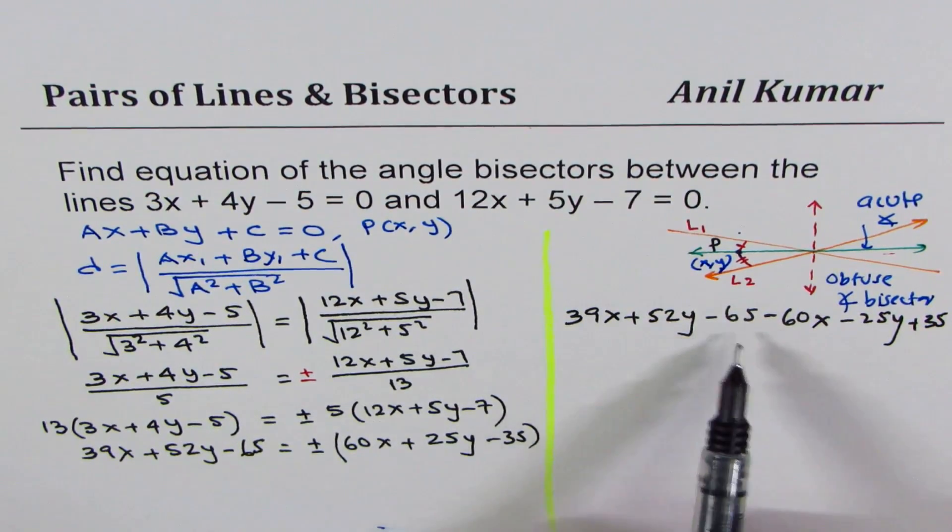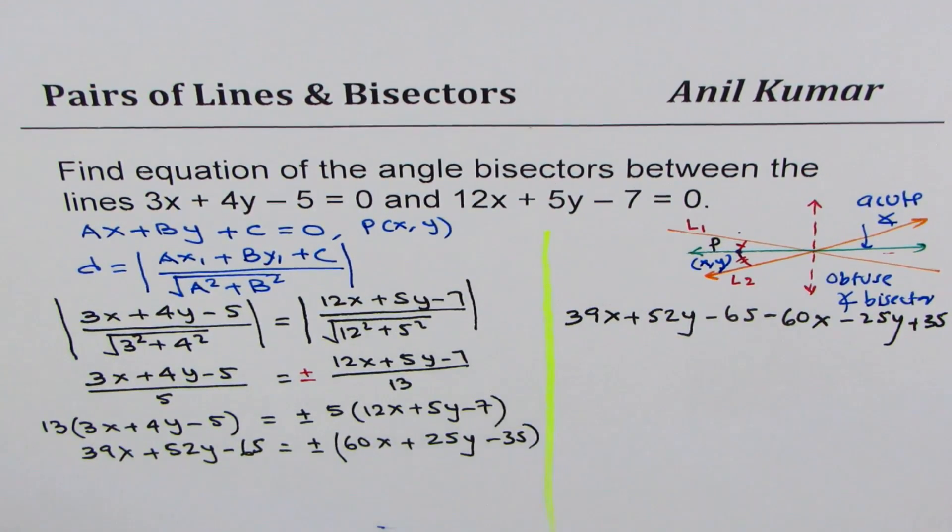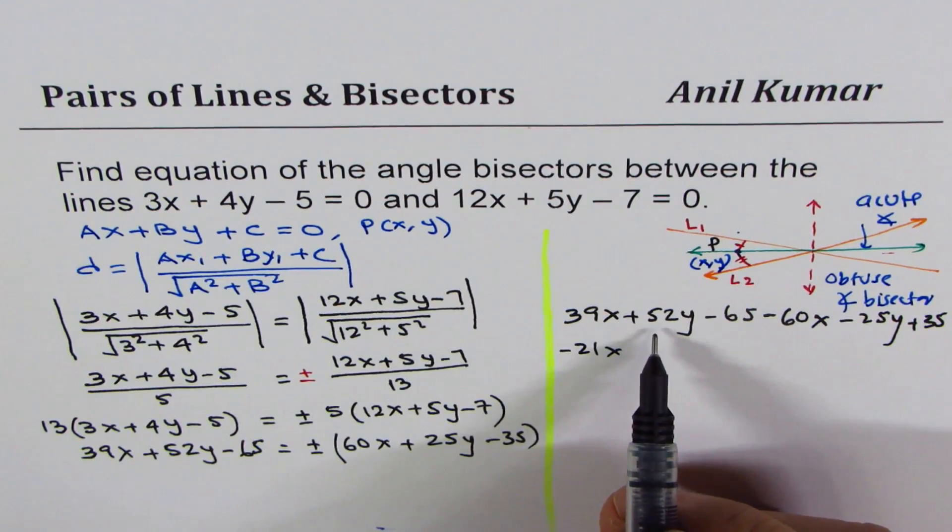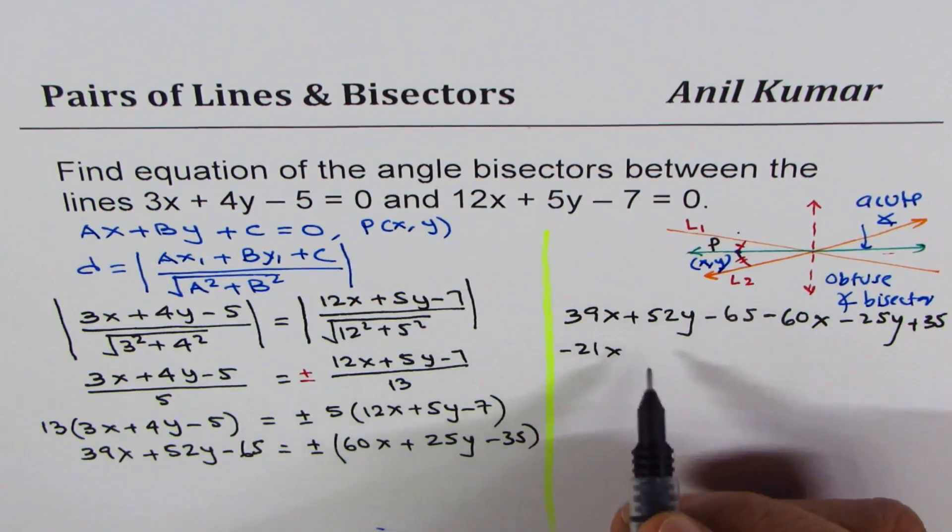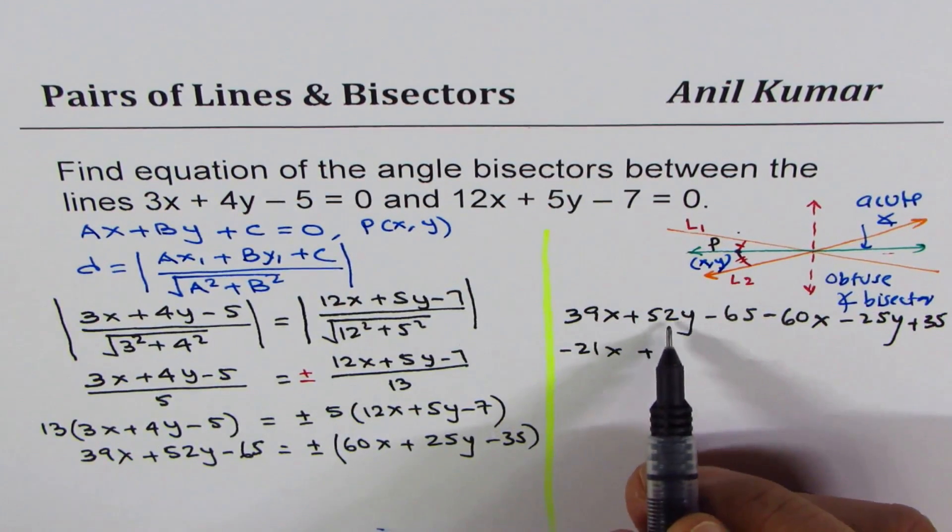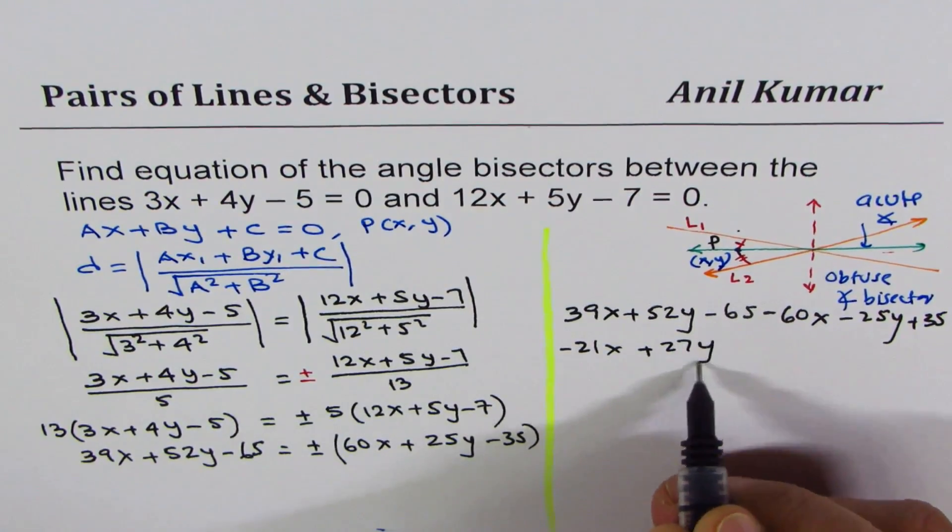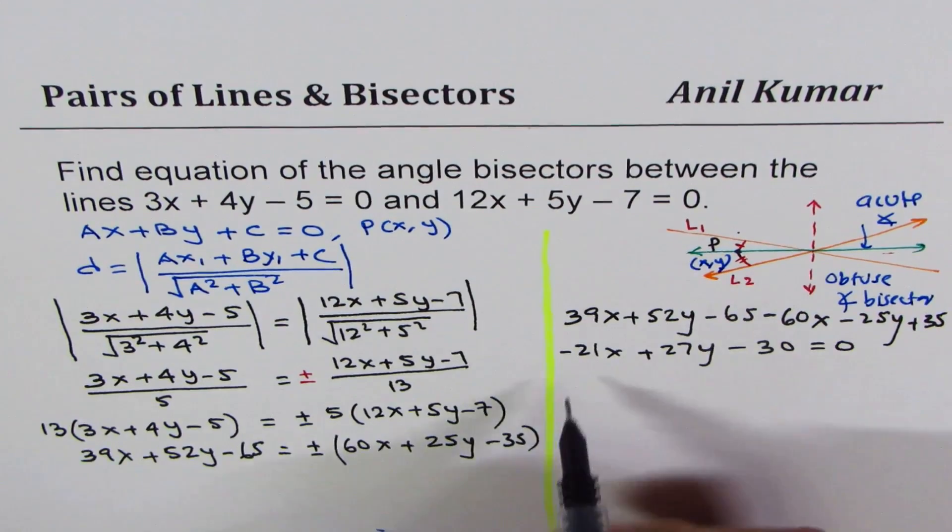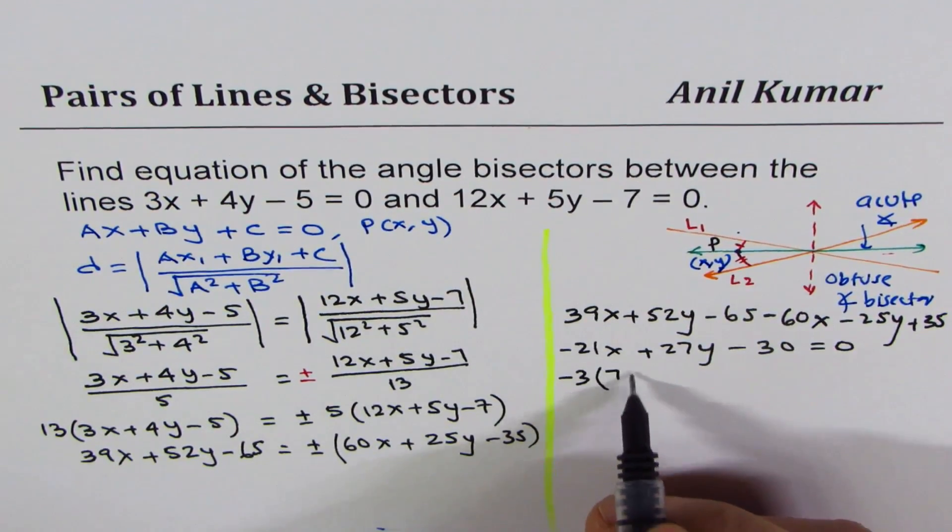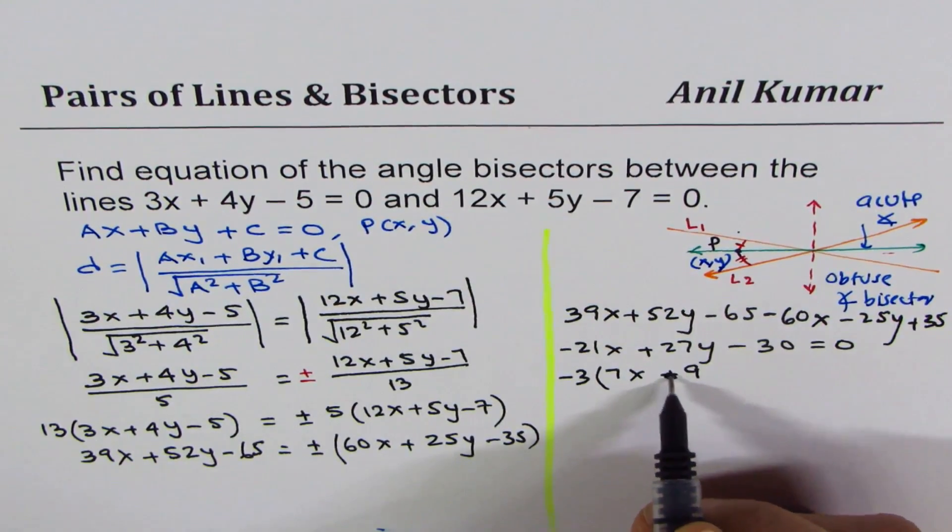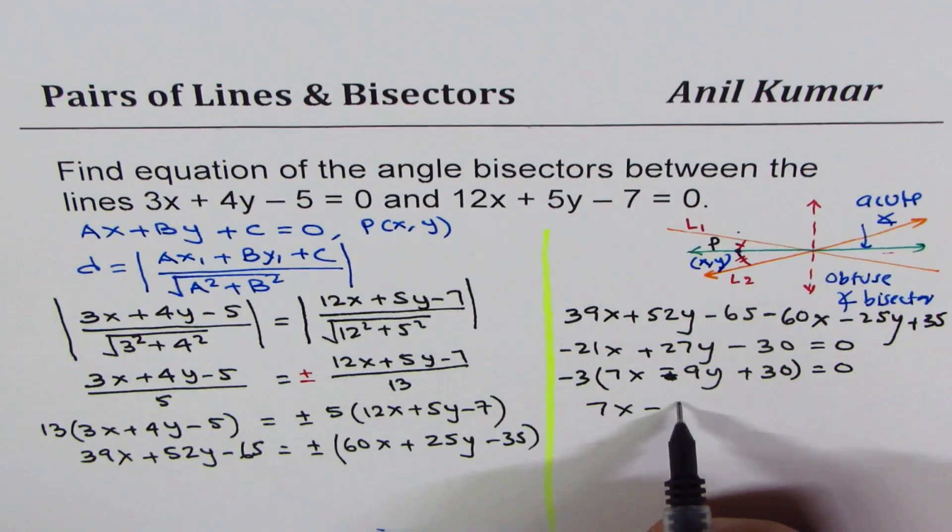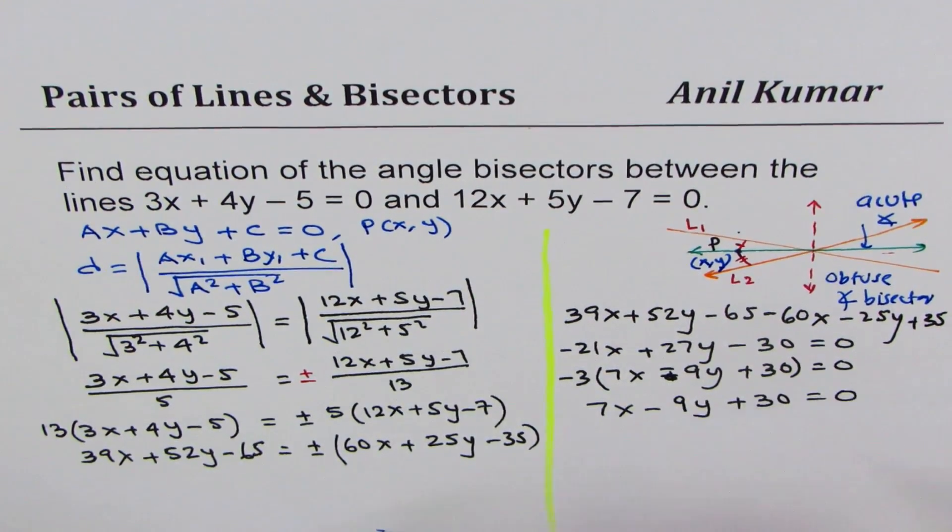Combining like terms: 39 - 60 = -21x, 52 - 25 = 27y, and -65 + 35 = -30. We get -21x + 27y - 30 = 0. Taking -3 common, one of our equations is 7x - 9y + 10 = 0.